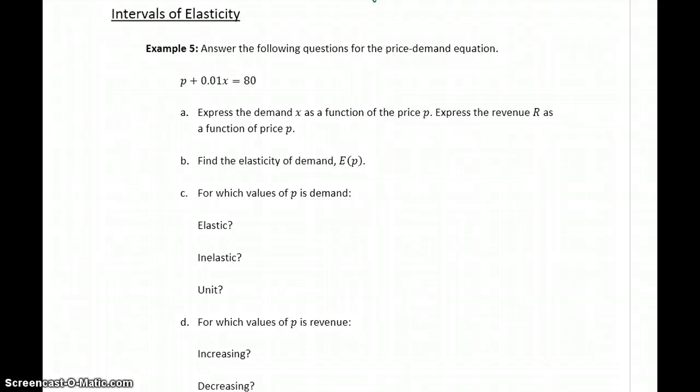So in example 5, we're given a price-demand function. We want to express demand as x as a function of p. So the first thing to do is take that price-demand function and solve it for x. This would give us x equals 8,000 minus 100p.